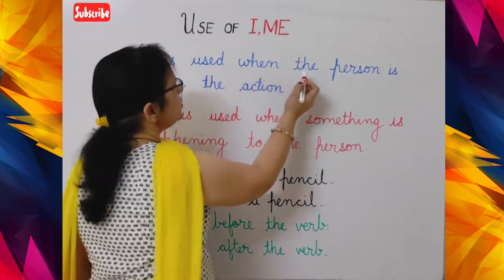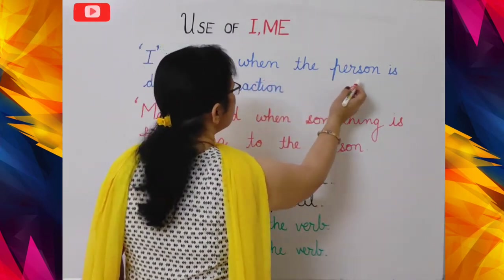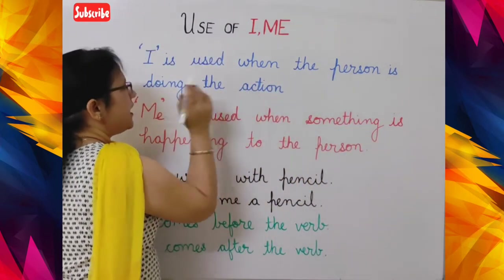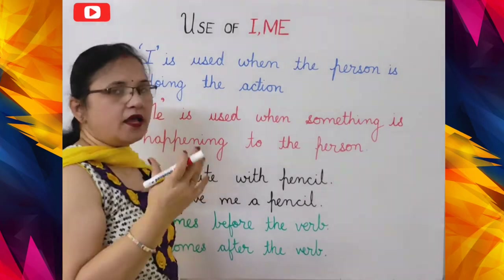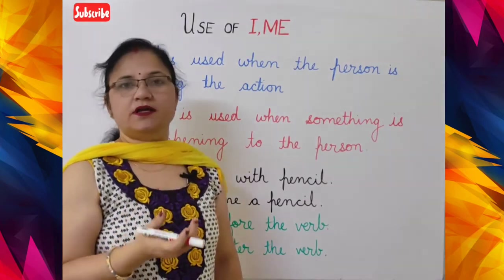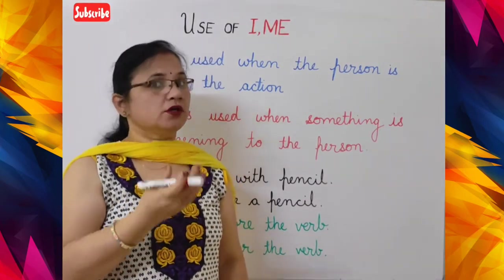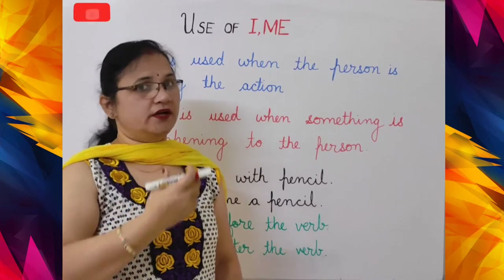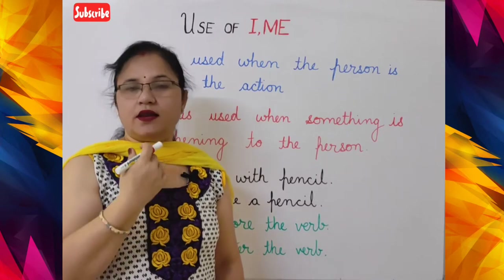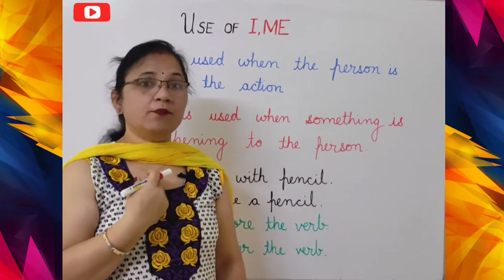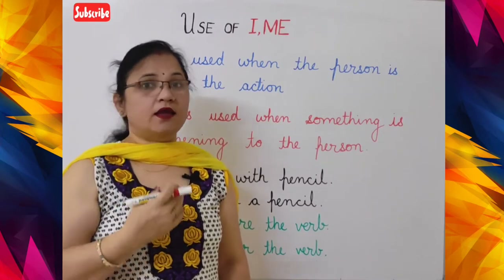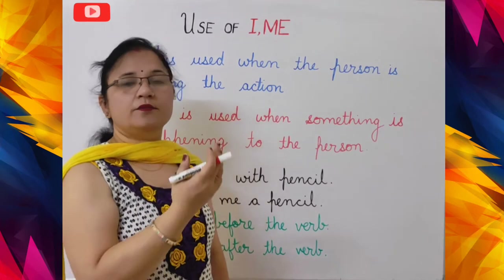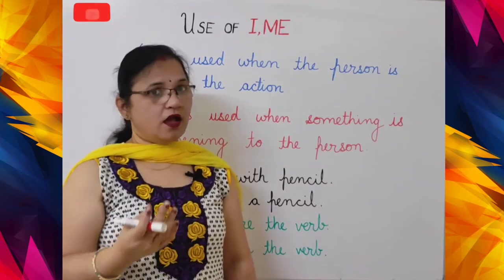I is used when the person is doing the action. Like, what action am I doing? I am teaching — so I will use 'I'. I am writing — I is used when you are performing the action.